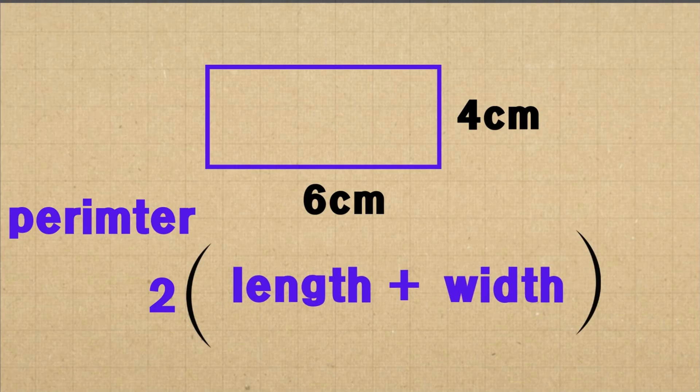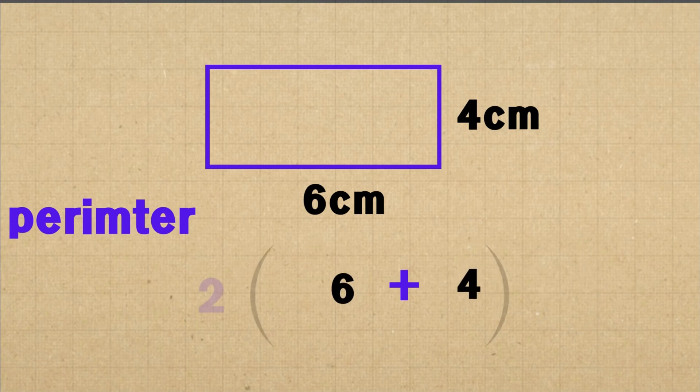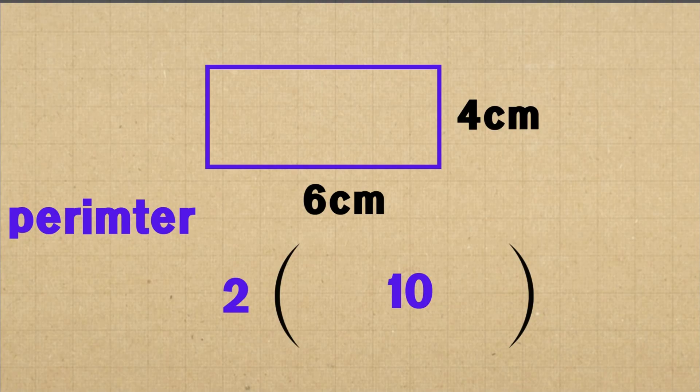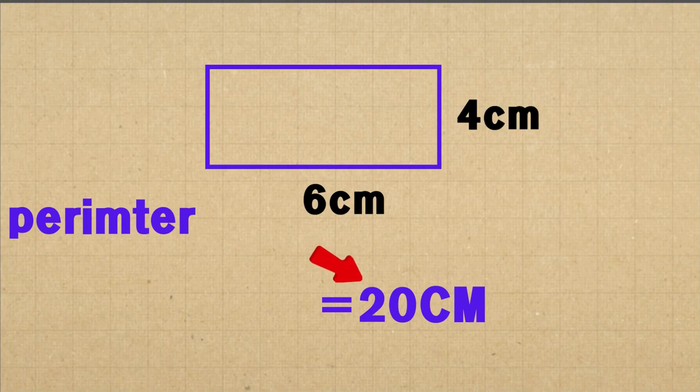Now let's take an example. Suppose we have a rectangle with a length of 6 cm and a width of 4 cm. To find the perimeter, we follow these steps. First we add the length and the width together: 6 plus 4 equals 10. Next, we multiply that result by 2: 2 times 10 equals 20. So the perimeter of the rectangle is 20 cm.